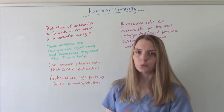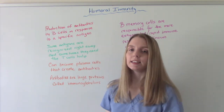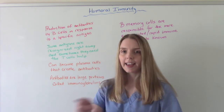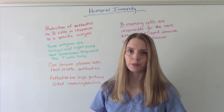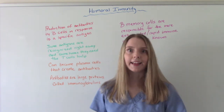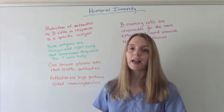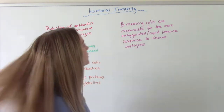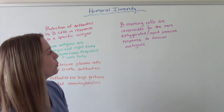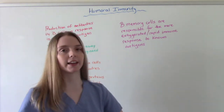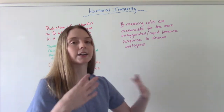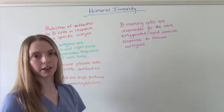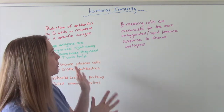Some antigens are recognized right away, and sometimes they actually need the T-cells to help them — T-cells are really good at pointing out antigens as foreign, saying this one doesn't belong. So sometimes B-cells need the T-cells' help with that. The B-cells' big job is antibody production. What happens is they differentiate into plasma cells and then produce antibodies, which are known as immunoglobulins. B-cells are responsible for the more exaggerated immune response — like someone having an allergic reaction — or in a good case, a more rapid immune response to a known antigen.